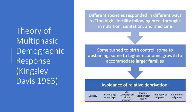Those strategies include celibacy, waiting to get married, using contraception within marriage, also increasing rates of abortion or sterilization, and also migration as a response — both internal rural-urban migration and external international migration.